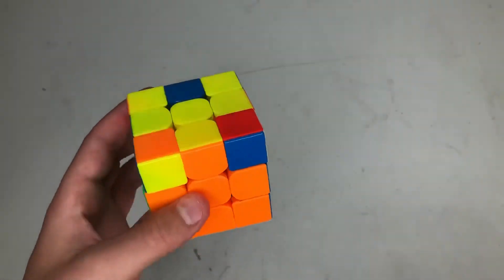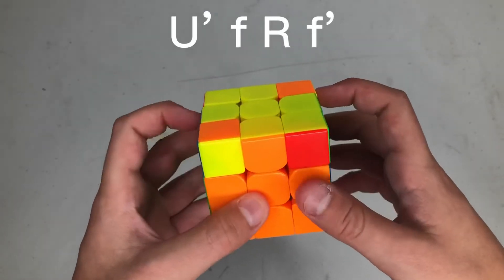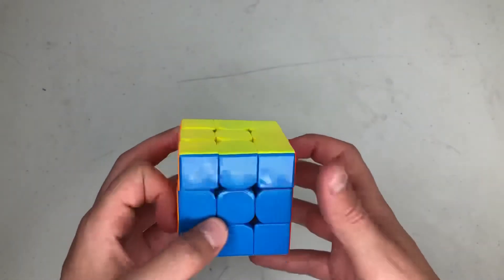What you can do is this: U prime, Y F, R, Y F prime. Again, now fast.